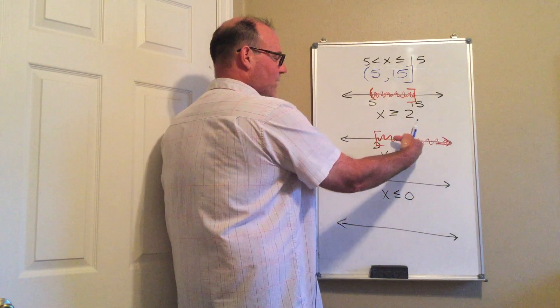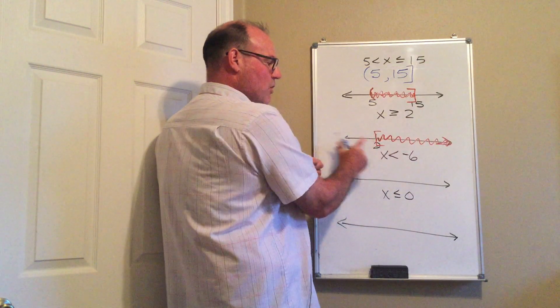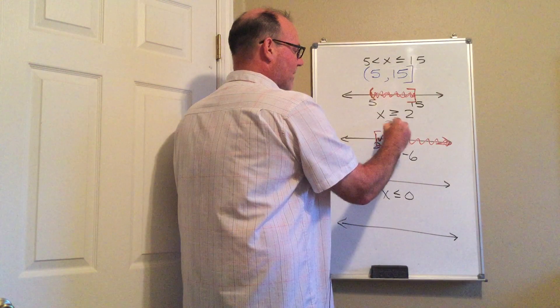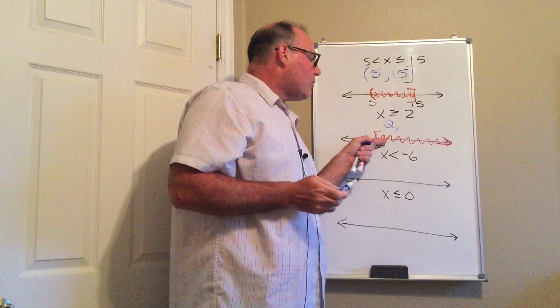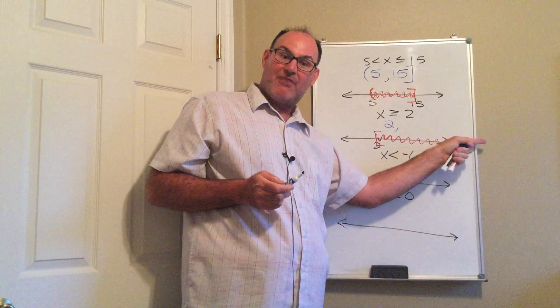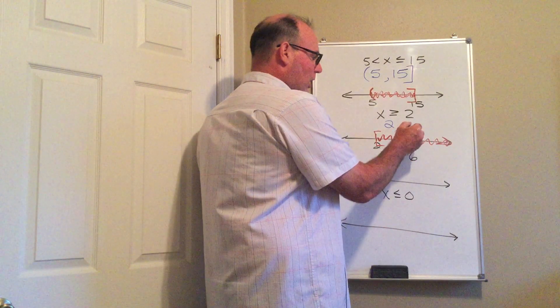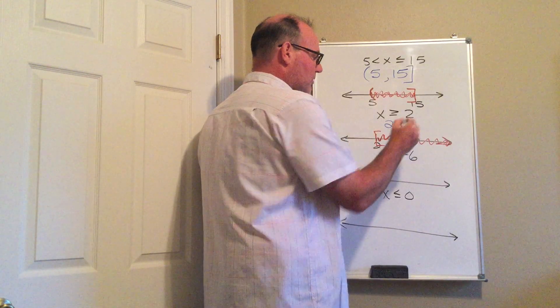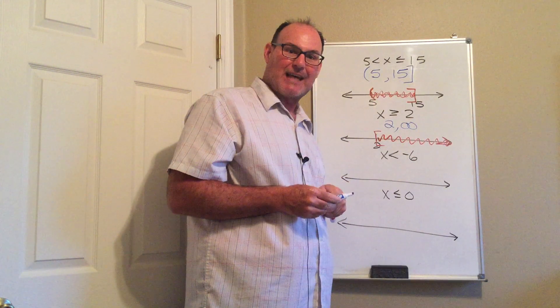look, follow my finger. This does not go any further left than 2. There's no shading on this end. So my lower bound is 2. Now what we use when there is no upper bound, notice this interval keeps going forever and ever and ever to the right. We use a symbol called infinity. And the infinity symbol looks like an 8 that's laying on its side.